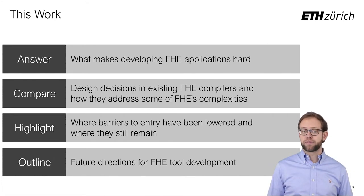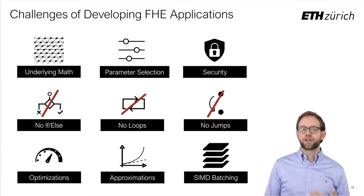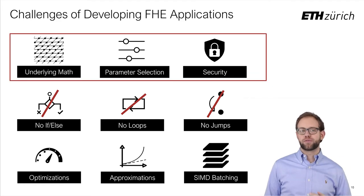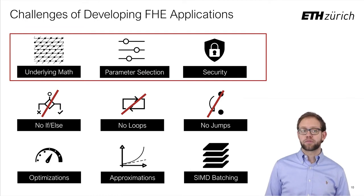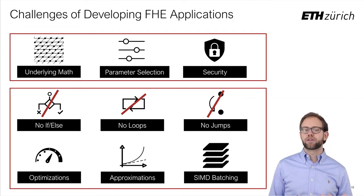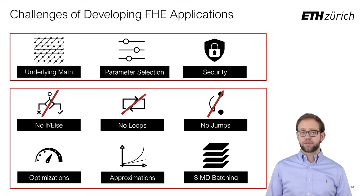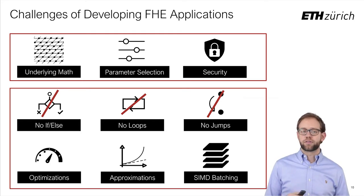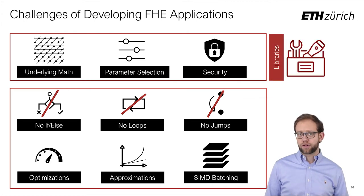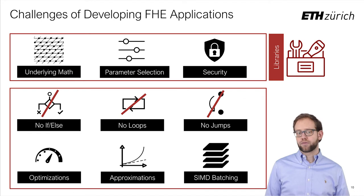In order to evaluate the different tools, we first need to understand the challenges they're trying to address. While FHE poses a lot of challenges, we can roughly categorize them into two groups. First, we have cryptographic challenges closely related to the specifics of current FHE schemes — for example, selecting parameters that are both secure and efficient for the given application. On the other hand, we have higher-level challenges that arise due to the unusual computation model inherent in FHE, including the lack of branching instructions and the need to exploit clever approximations and optimizations. In terms of tools, libraries tend to focus on the first group, for example by implementing the various transformations required to efficiently compute multiplications between large ciphertexts.